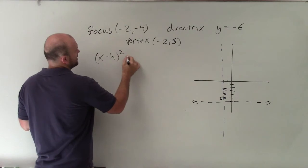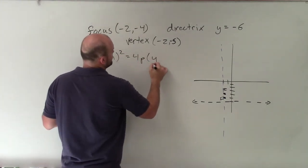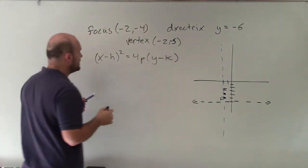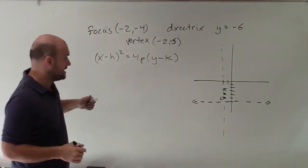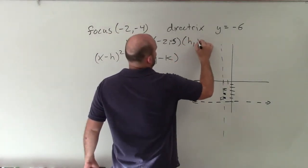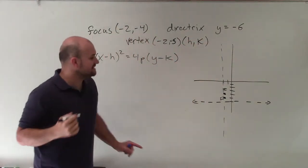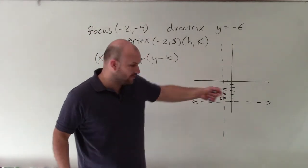x minus h squared equals 4p times y minus k, where h and k represent your vertex, and p represents the distance from my vertex to my focus.